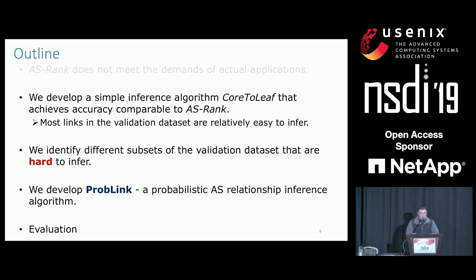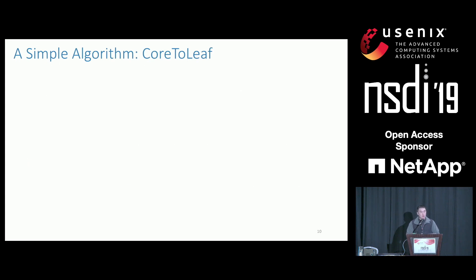We then construct various subsets of the validation dataset that are hard to infer and use them as a benchmark for evaluation. We developed a probabilistic AS relationship inference algorithm called PropLink, which is stable and practical. To study why ASRank achieved near-perfect accuracy on the validation dataset but performs poorly on actual applications, we developed a very simple algorithm called call-to-leaf. It only takes three steps, whereas the ASRank algorithm takes 11 steps.